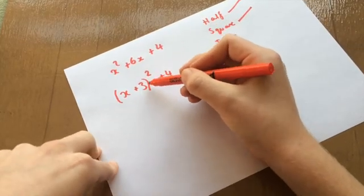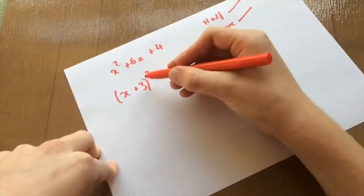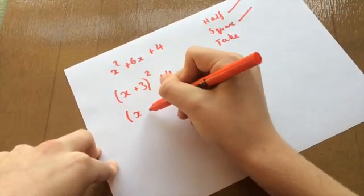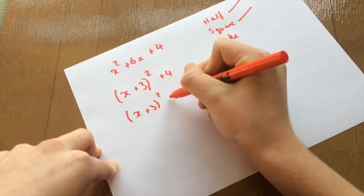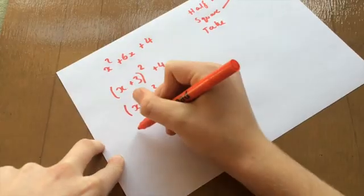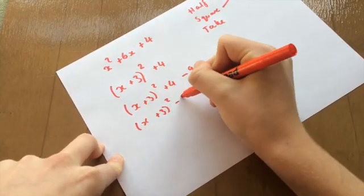So 3 squared is 9. So here, we'd actually have an excess 9 on top, which we don't want, obviously. So we'd have to do x plus 3 squared plus 4 minus 9, like that. And this would obviously leave you with x plus 3 squared minus 5.